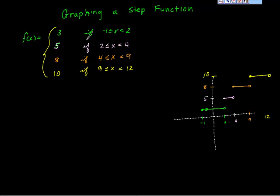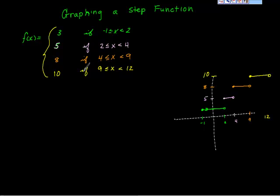f of x has a height of 3 if the x value is greater than or equal to negative 1 and less than 2. It will have a height of 5 if x is greater than or equal to 2 but less than 4. f of x will have a height of 8 if x is greater than or equal to 4 but less than 9. And finally, f of x will have a height of 10 if x is greater than or equal to 9 but less than 12.